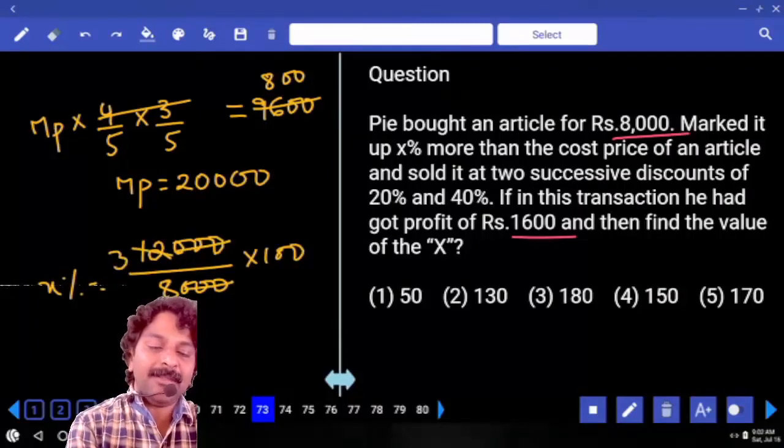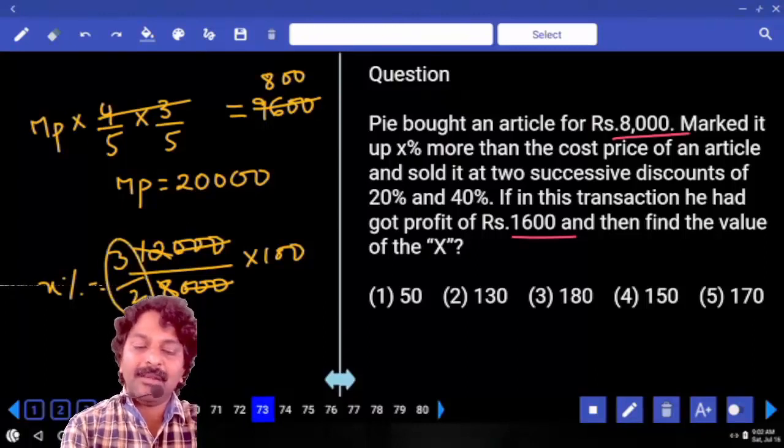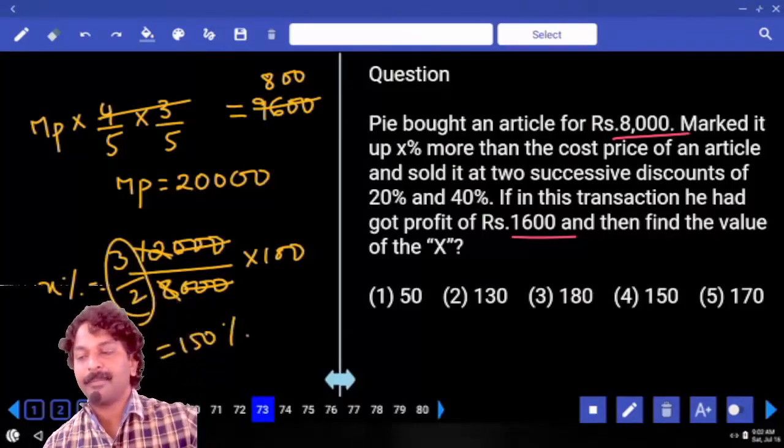This is 3 by 2, which equals 1.5. So X equals 150.